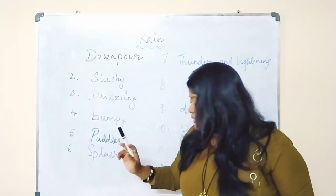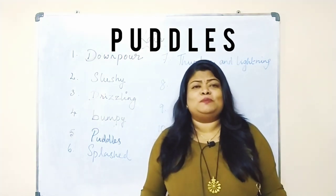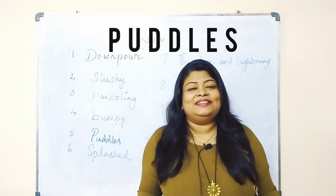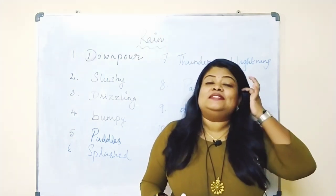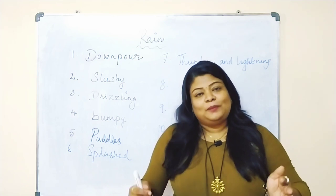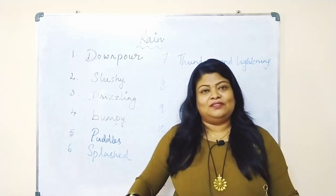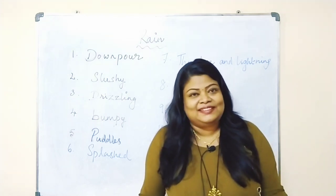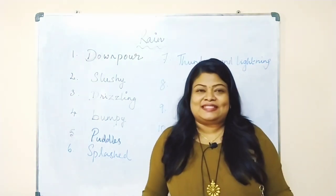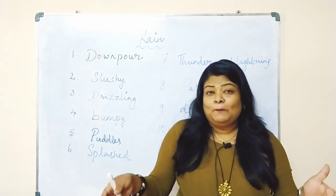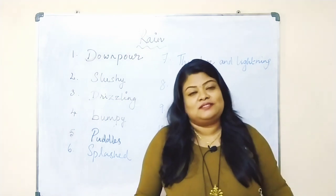The next word is 'puddles.' This is a word we've heard since childhood but many don't know the meaning. Puddles are those small collections of water scattered here and there after rain — those small pools of water on the ground where children used to play. So we say 'the children are playing in the puddles.' Puddles means those small, scattered water pools — konjum konjum thanni nikara kutti kolikal.